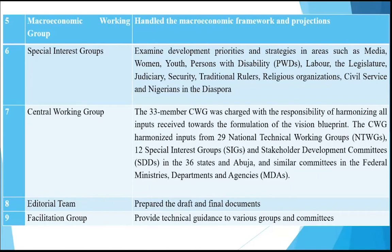A Special Interest Group examined development priorities and strategies in areas such as media, women, youth, persons with disability, labor, the legislature, judiciary, security, traditional rulers, religious organizations, civil society, and Nigerians in the diaspora. A 33-member Central Working Group — of which the speaker was a member — was charged with harmonizing all inputs from 29 national technical working groups, 12 special interest groups, and stakeholder development committees in the 36 states and similar committees in federal ministries, departments, and agencies.